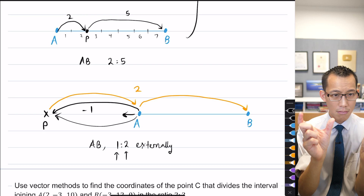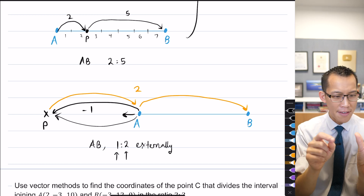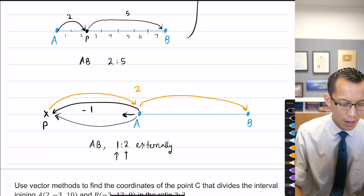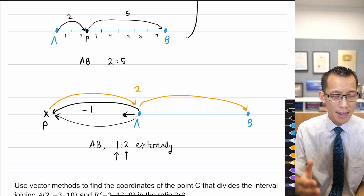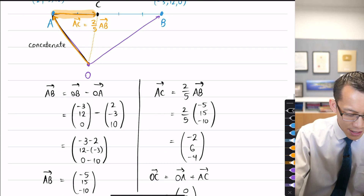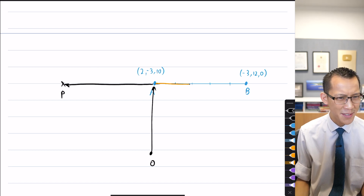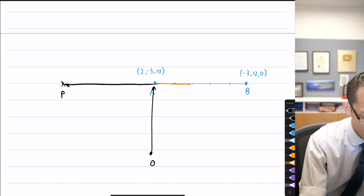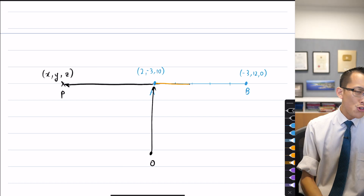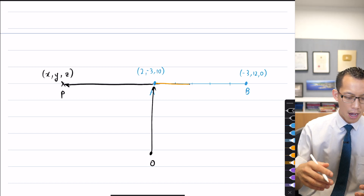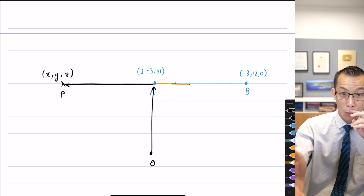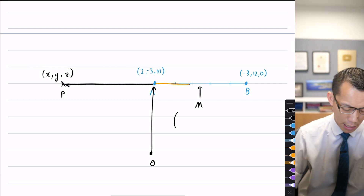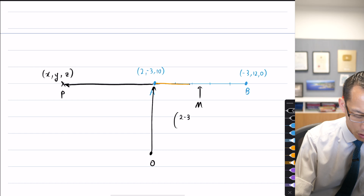They should be the same - that's the whole one to two. It's the same as internal division: each little section is the same. Since those distances are the same, effectively A is just the midpoint between B and P. So we now have two ways of going about this. We can say P is some arbitrary X, Y, Z. You know how to find the midpoint if you know the coordinates - midpoint of AB, you just average all of the components.